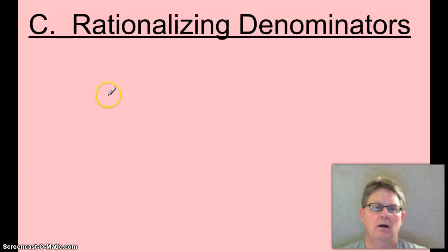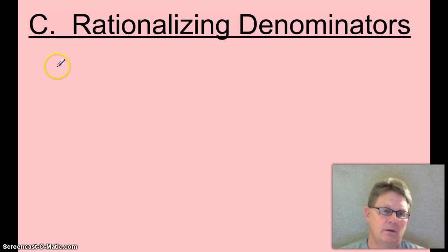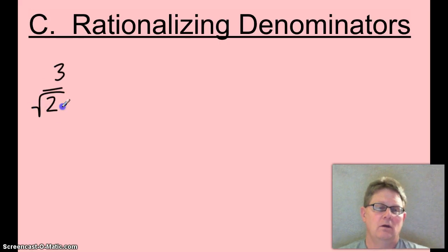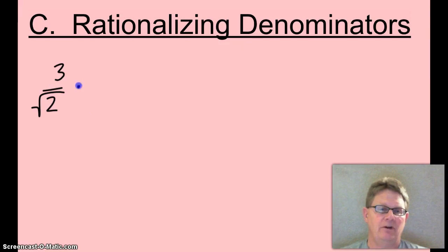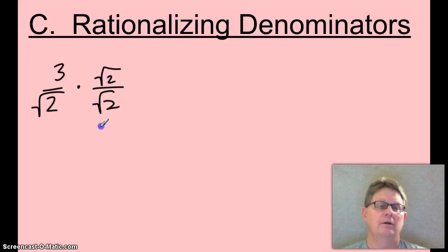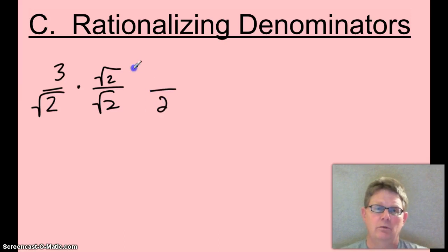When we are dealing with radicals in the denominator, like 3 over root 2, we're not allowed — until you get to AP Calc — to have root 2 in the denominator. So we're going to multiply by a very special form of 1. That special form will make it so there's a whole number in the denominator. Root 2 over root 2 equals 1, giving us 3 root 2 over 2.